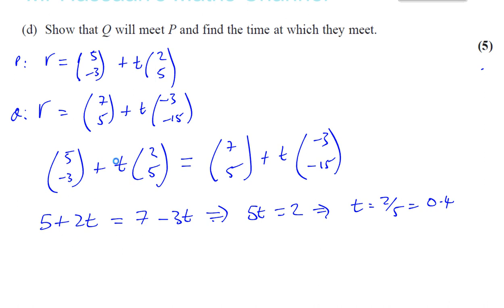And if I find the same value of T in the second equation taken from the J components, minus 3 plus 5T equals 5 minus 15T. Let's bring the T's together. I've got 20T on this side. 5 plus 15T is equal to 5 plus 3, which is 8. So T is equal to 8 over 20, which equals the same thing. Divide by 4, which is 2 over 5, which is 0.4.